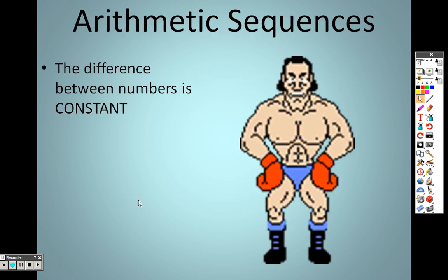So, an arithmetic sequence basically is saying there's a difference between numbers and that difference between the numbers is constant. That's basically what we're saying. So, it's like those problems I gave you, like 2, 4, 6, 8. The difference between the numbers every single time is 2. That's constant, so that means it's an arithmetic sequence.